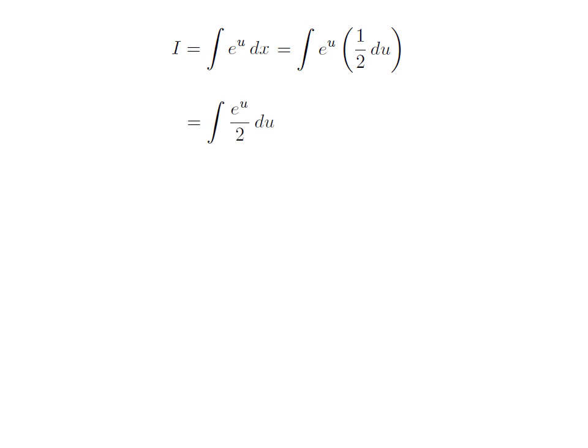Multiplied 1 upon 2 with e to the power u, we got I is equal to integration of e to the power u divided by 2 with respect to u. This is a simple integration. 1 by 2 is the constant. The integration of exponential of u is exponential of u. So, I is equal to half of e to the power u.